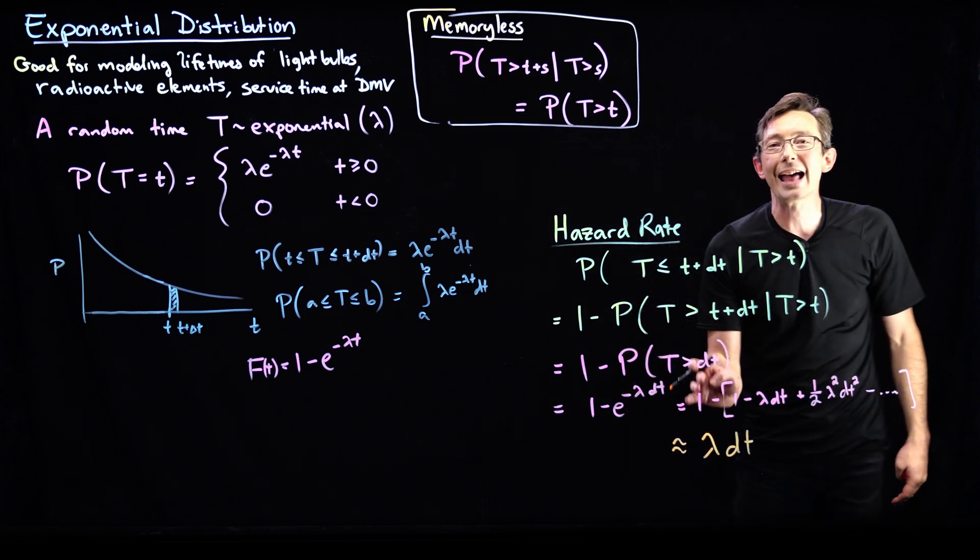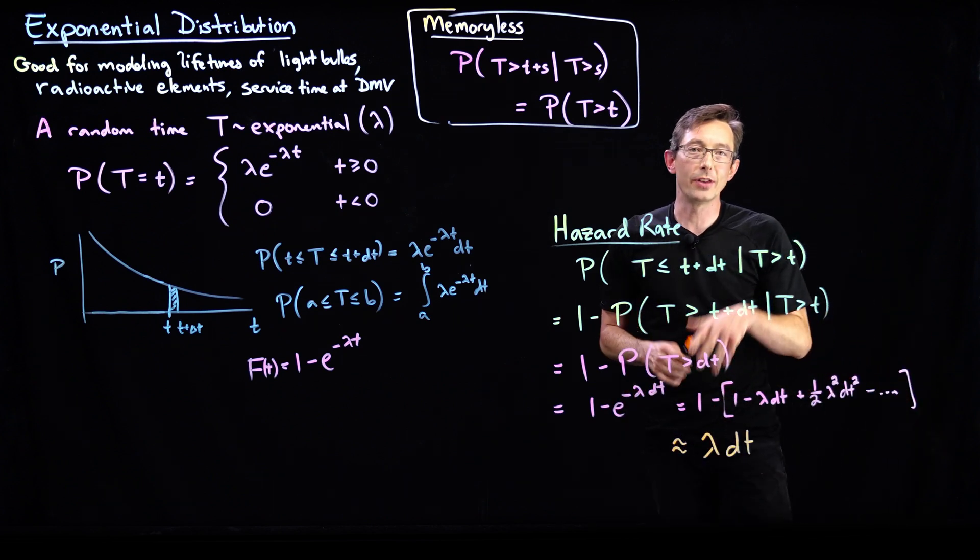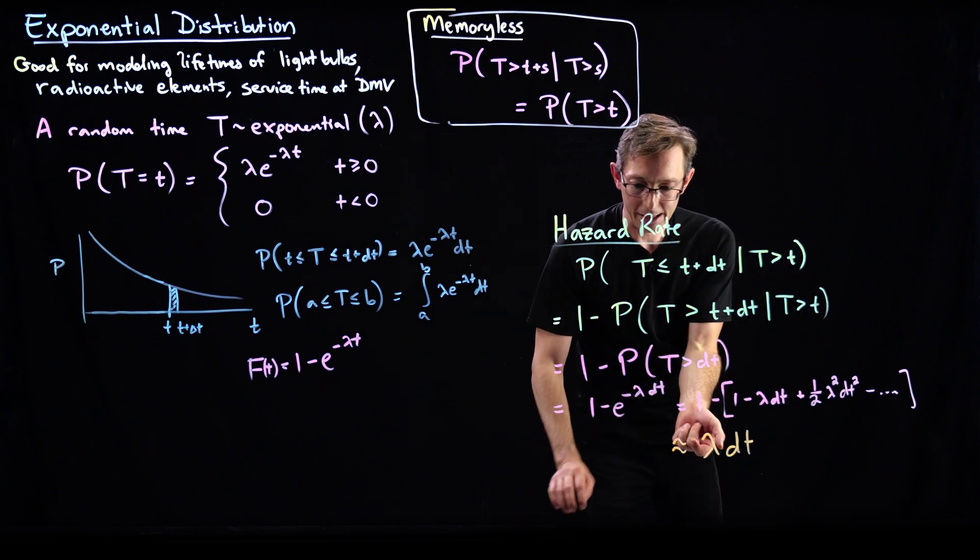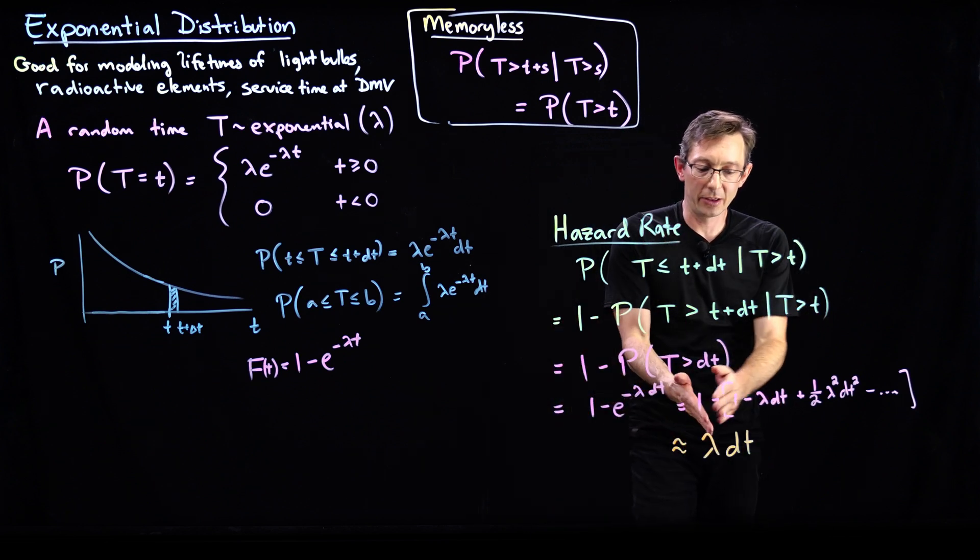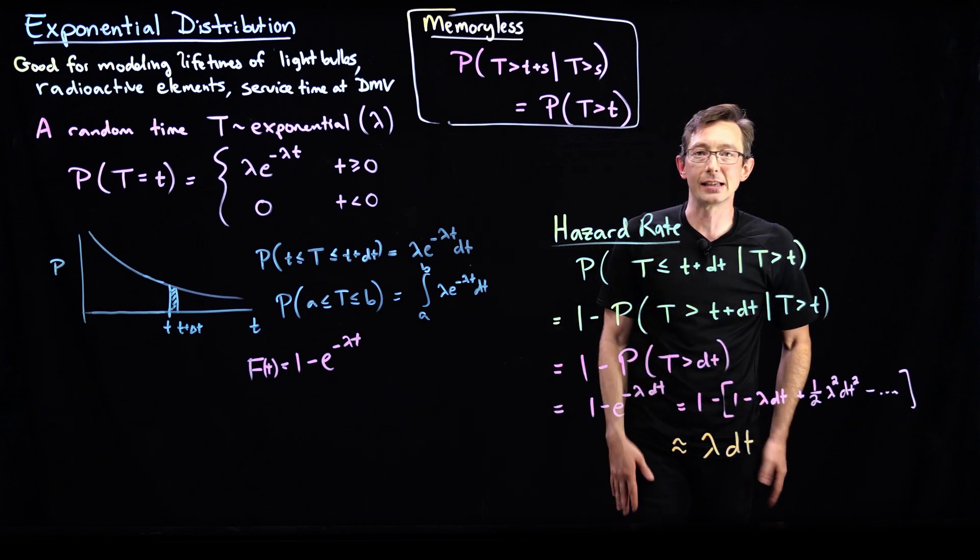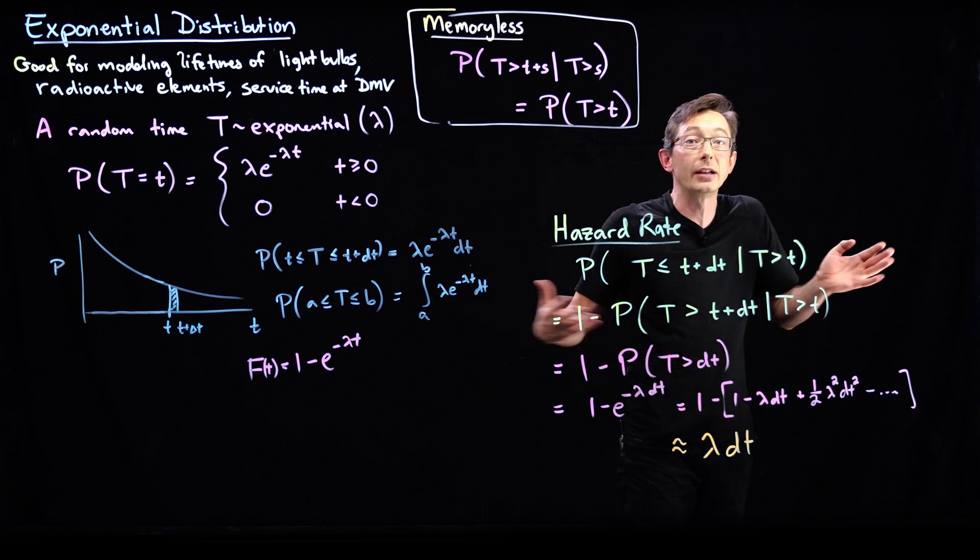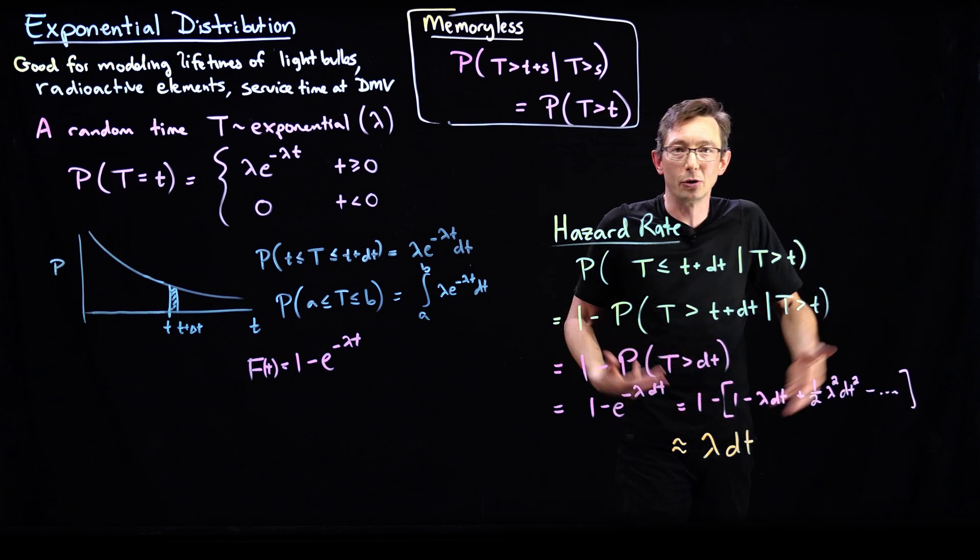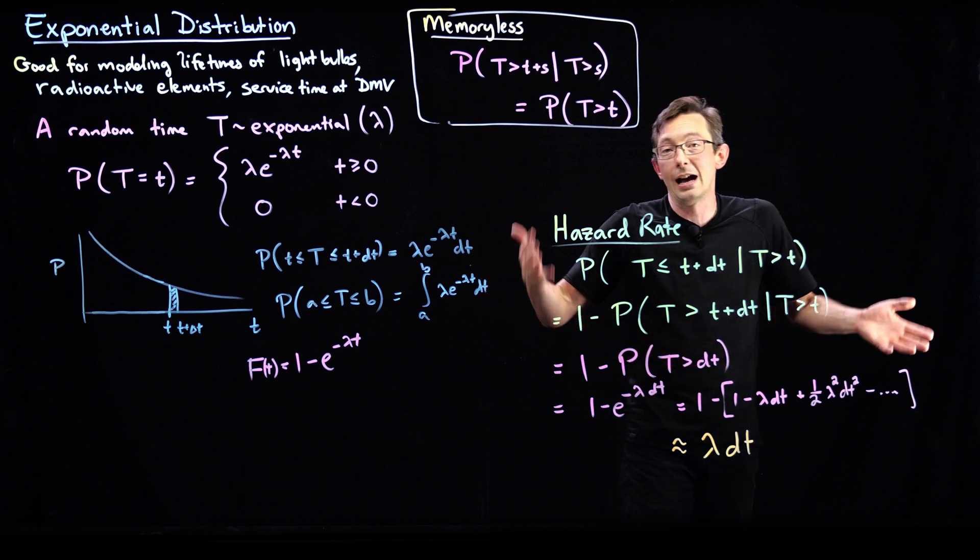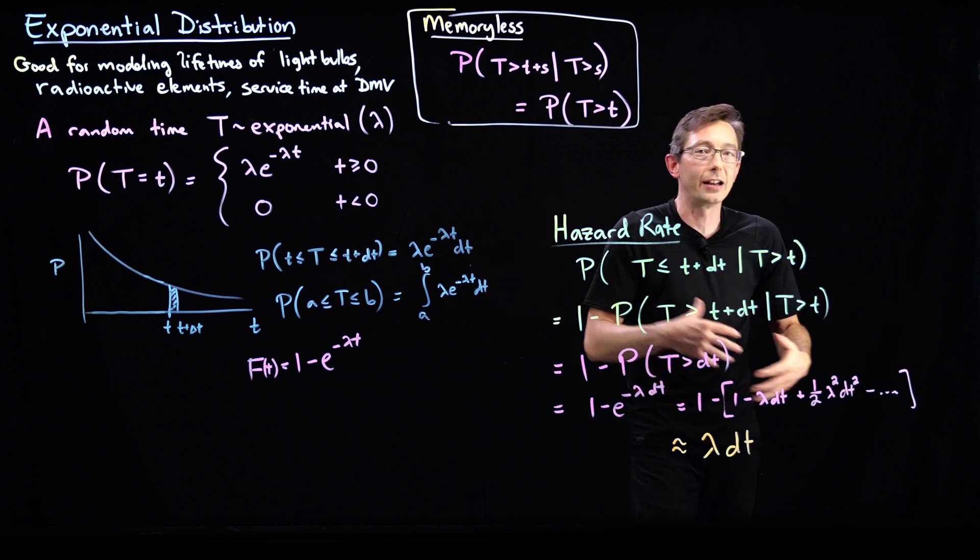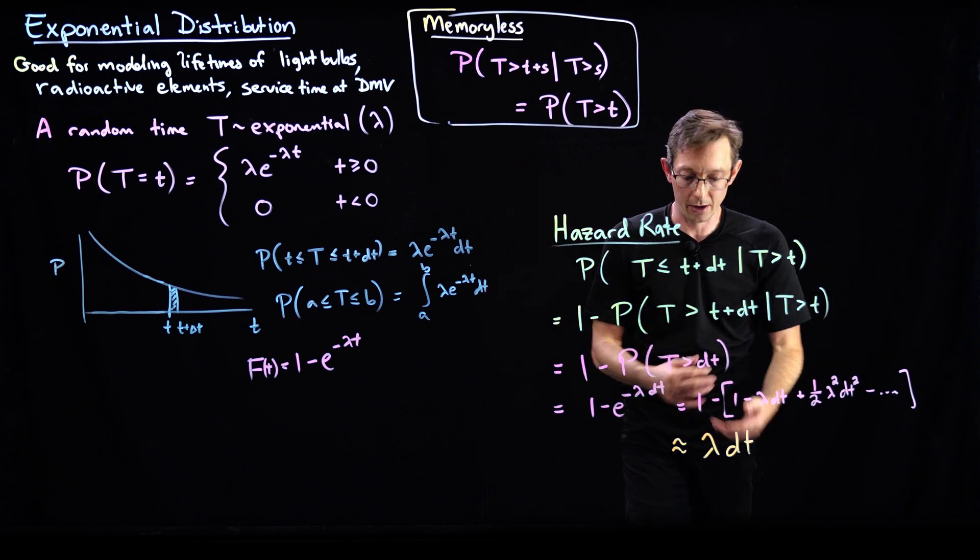So lambda, this is known as the hazard rate. The kind of risk associated with living another dt is this lambda. This lambda dt is the hazard rate of just continuing to exist. So this light bulb, by the virtue of it not failing, it has this continuous kind of hazard rate of failure, lambda dt.